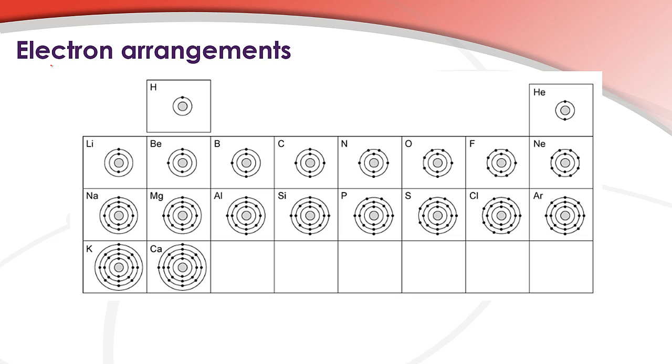Electron arrangements. Electron arrangements show how the electrons are arranged in the energy levels of an atom. Here we have a periodic table going from element 1 which is hydrogen to element 20 which is calcium.